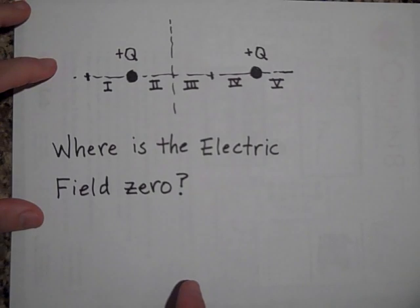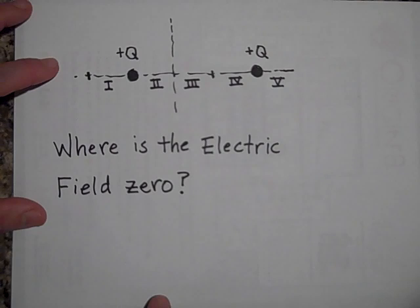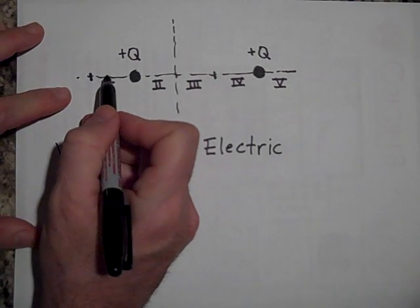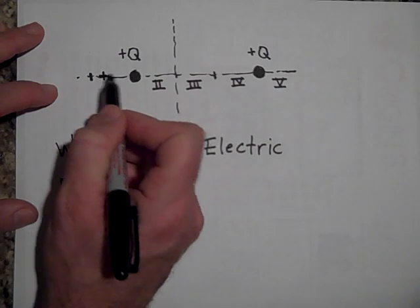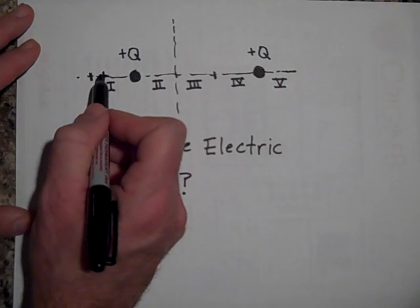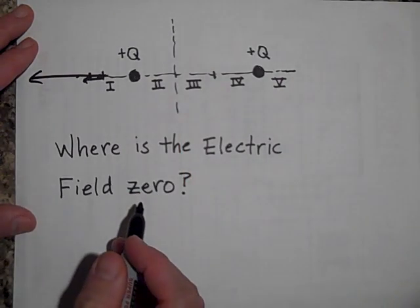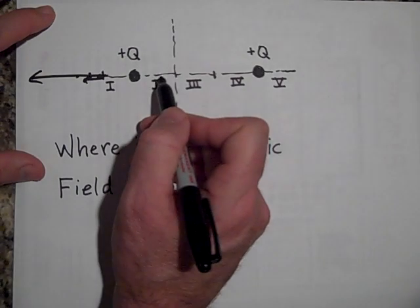Okay. Could you tell me in which region the electric field is going to be zero? In which region or regions will the electric field be zero? Okay. Well, let's see. In region one, it's not going to be zero because if I put a positive test charge here, it's going to be being repelled by this guy with a lot of force and by this guy with a little bit of force. And so those are going to not cancel.